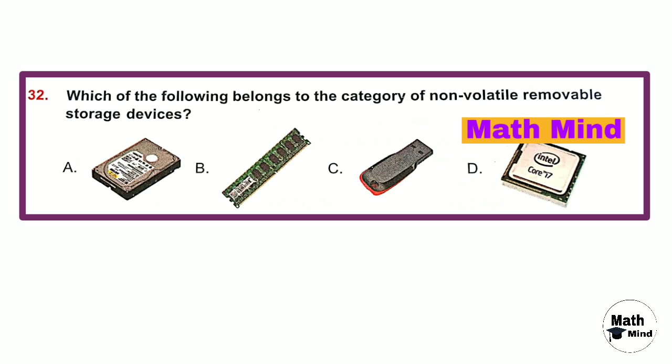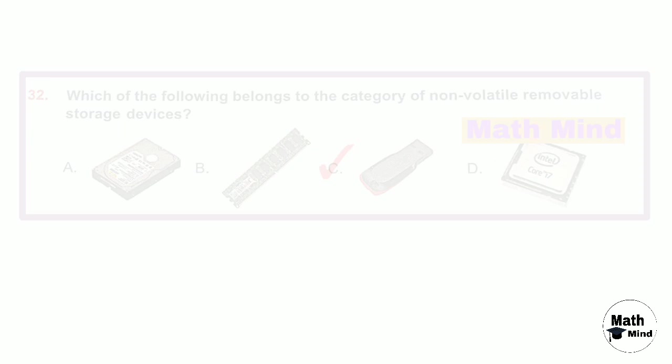Question number 32: Which of the following belongs to the category of non-volatile removable storage devices? Option C is correct — pen drive.